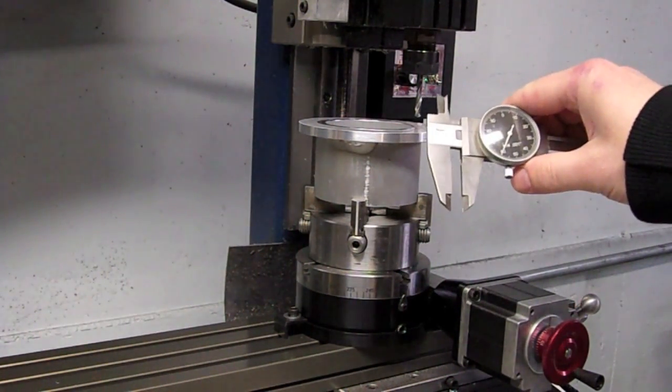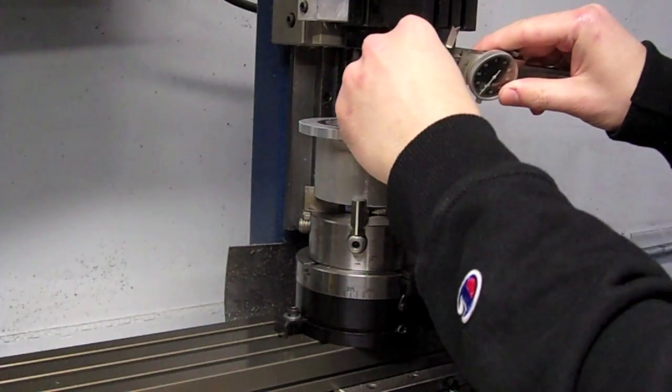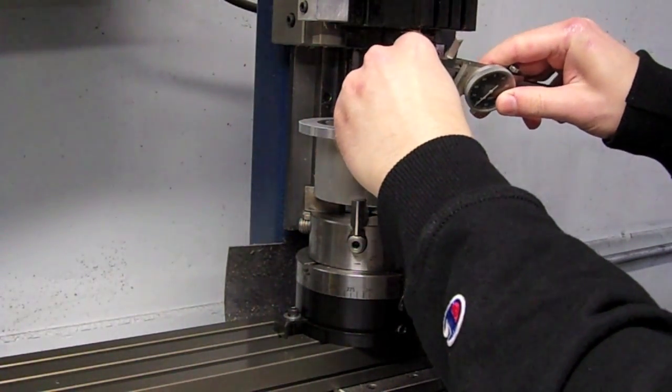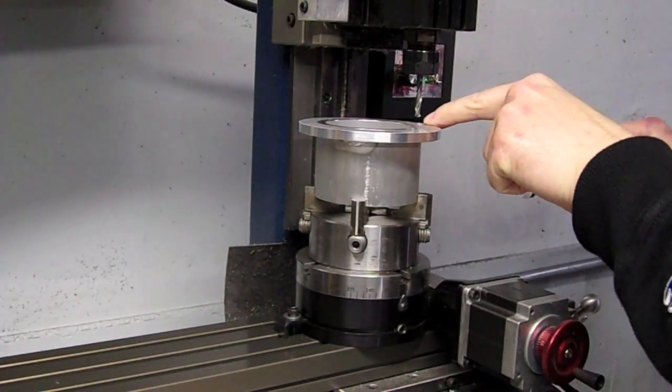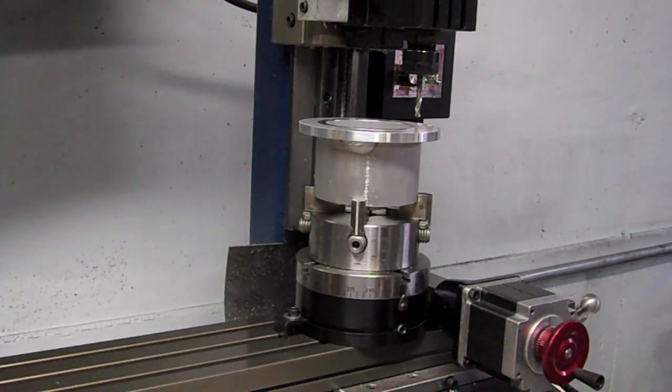I'm going to take some calipers I have here and make a little scribe line at the point inward where I want the hole to be drilled. Then from that point, we'll just rotate the table around to do the other two holes.